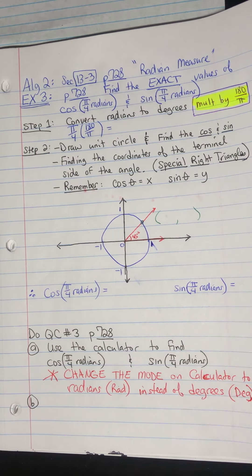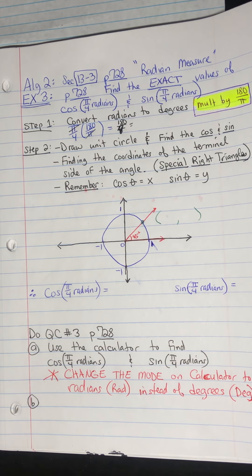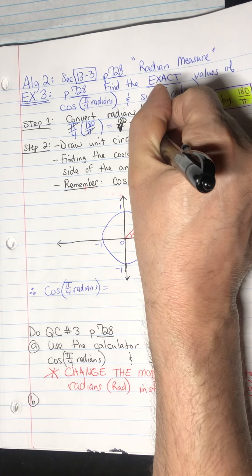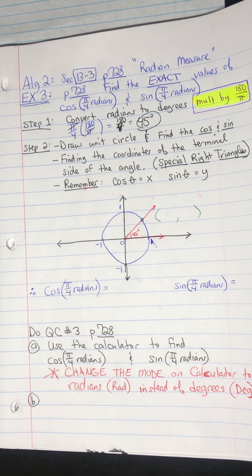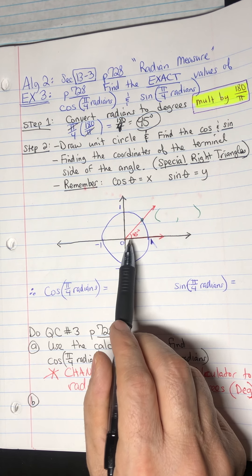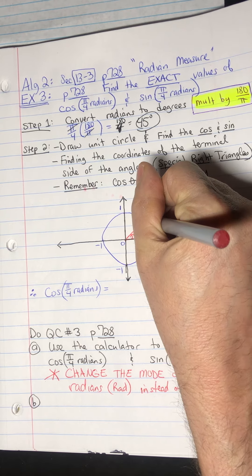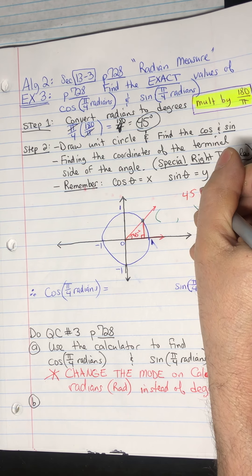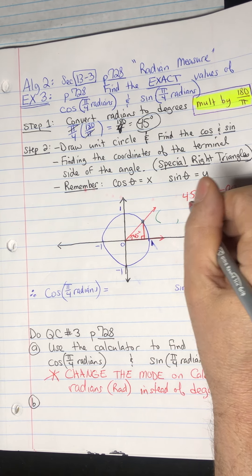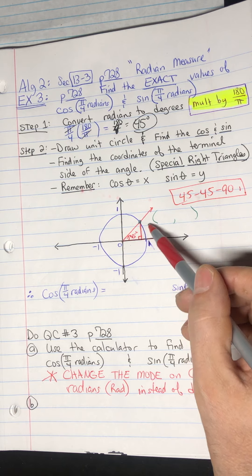Pi in the numerator and pi in the denominator cancel out, leaving 180 over 4, which is 45. So pi over 4 equals 45 degrees. Now that I know pi over 4 is 45 degrees, all I have to do is find the cosine and sine of 45 degrees. Draw a unit circle and find the 45-degree angle — that makes a special right triangle, specifically a 45-45-90 right triangle. The side lengths are related by the square root of two.